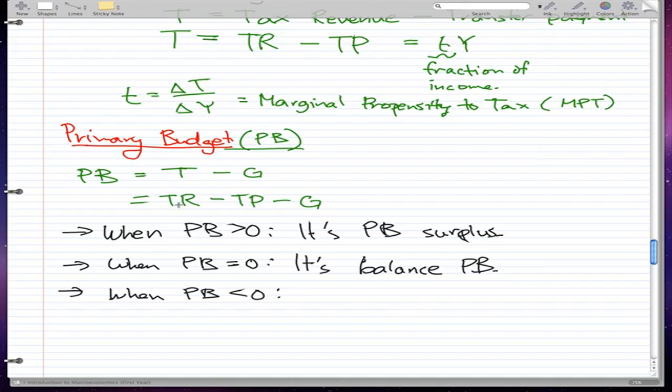You can make up an example: TR = $50, TP = $25, G = $25. At the end of the day, the government broke even. They made no money and no loss on the tax revenue.